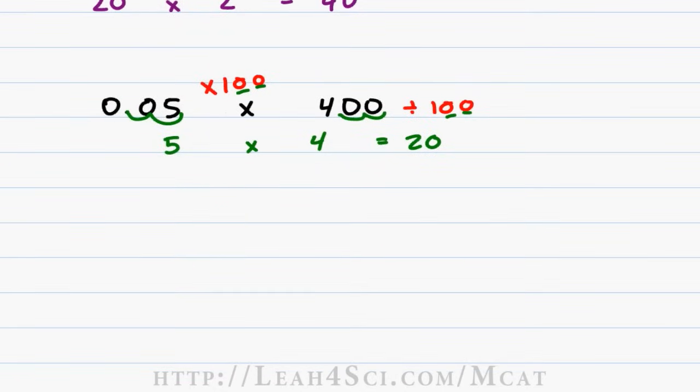So watch me do this without even writing times 100 divided by 100. Here's how I would look at it if it was an MCAT question. 0.05 is too small. I move the decimal 2 spaces to the right. To make up for that, I move the big decimal 2 spaces to the left. 5 times 4 as we already said is 20.